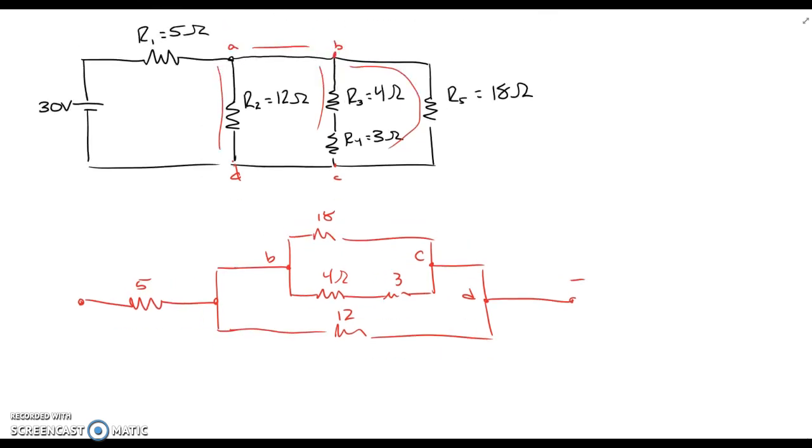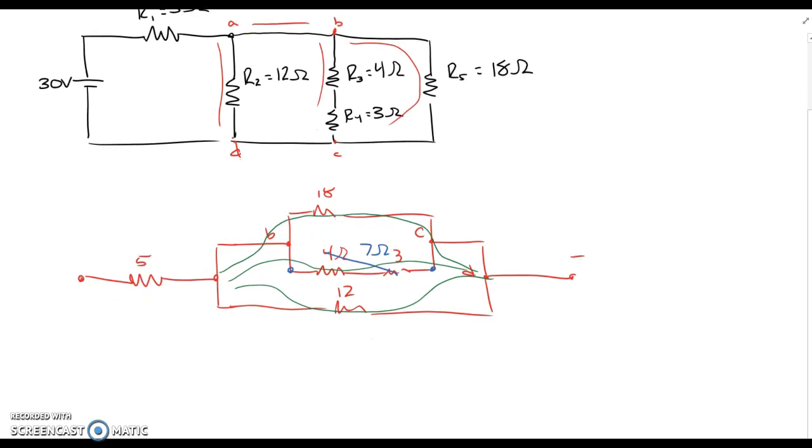And we can simplify within each branch. So if you look at this 4 and 3 ohm branch, they're in series. So I can combine them and say that they are a combined of 7 ohms. And now I can either see this as three different pathways, one through an 18 ohm resistor, one through a 7 ohm, and one through a 12 ohm. For the sake of time, I'm going to go ahead and just do all three at once.